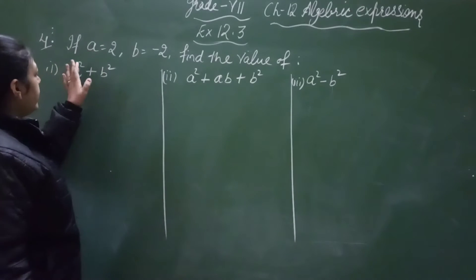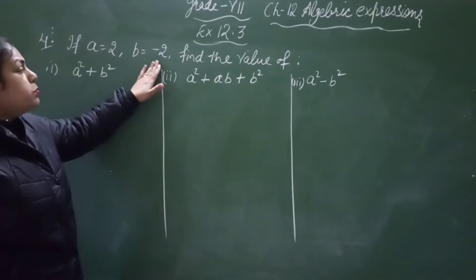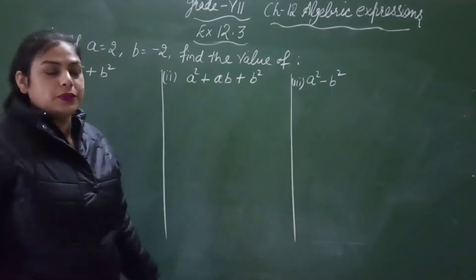Now we start fourth question. Here if a is equal to 2, b is equal to minus 2, then find the values of these expressions.